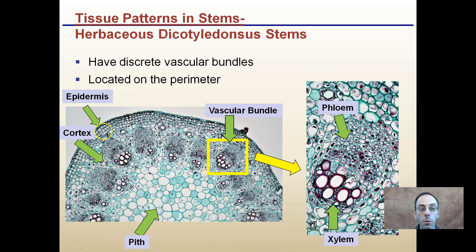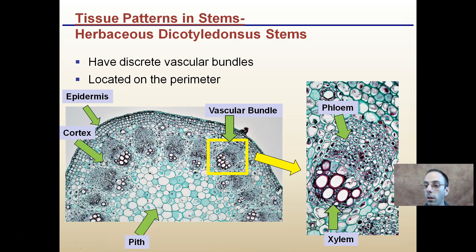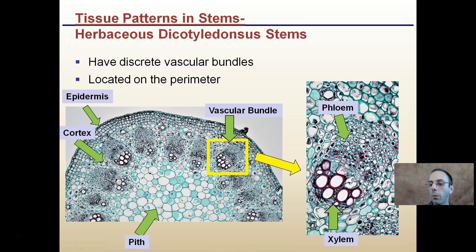The cortex, the epidermis as the outer portion, and our vascular bundle. If we zoom in on the vascular bundle, we notice that at the top we have phloem, and working our way down we have xylem. In the middle is the vascular cambium, producing phloem to the outside and xylem to the inside. Some good images are referenced — links are in the description.